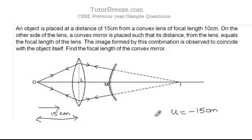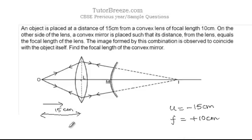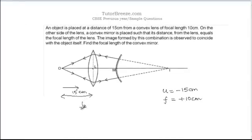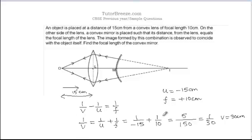The focal length of the lens is given to be 10 cm. Since it's a convex lens, the focal length is going to be positive. Now we know that the formula for finding the image distance is 1/v minus 1/u equals 1/f. Putting in the values, we get v is equal to 30 cm.